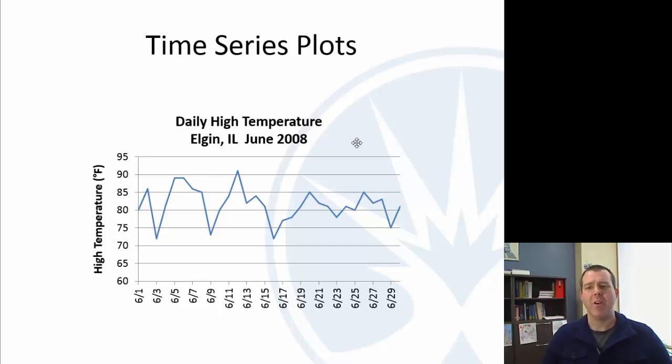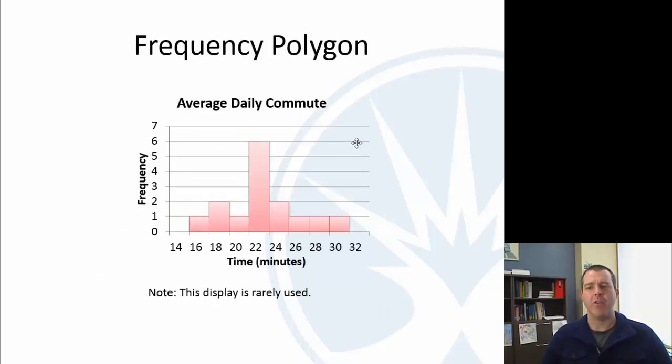So the next couple here are very rare. I do want to mention them though. So the frequency polygon. I've got a histogram here for a daily commute for the length of time. So this is continuous data because we have time.